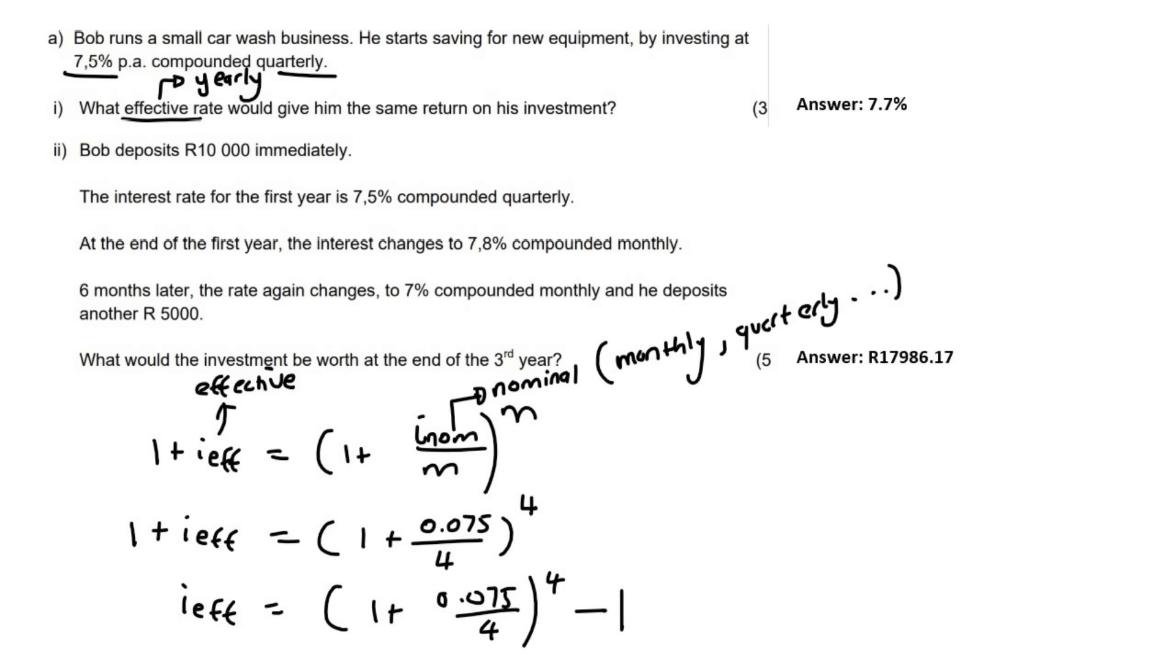Now, don't round off. You mustn't round off here. So what we'll find is that the i effective is equal to 0.07713, and then there's that whole number. Then to get the percentage, we just multiply that with 100. And so the final answer for this one will be 7.71%. I'm not sure why the answer that I found on the memo where I got this exam paper—maybe they were doing one decimal for that question. But it should be 7.71%.